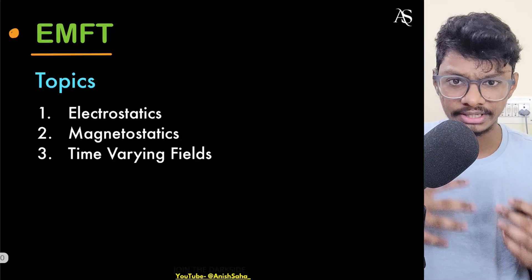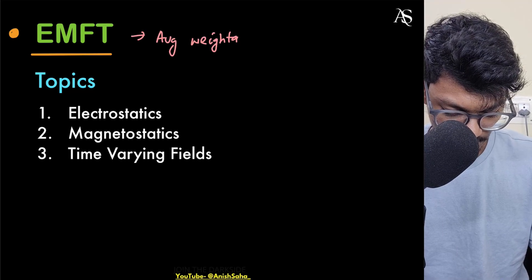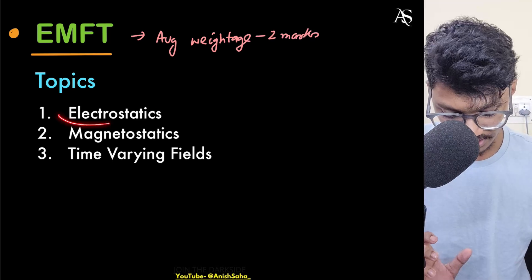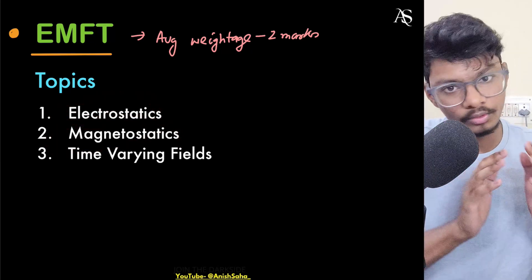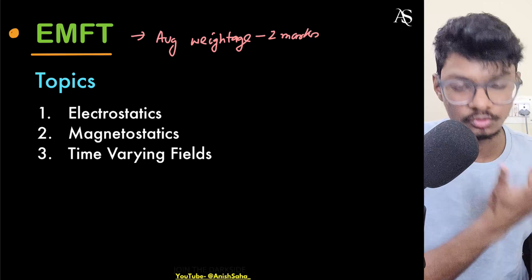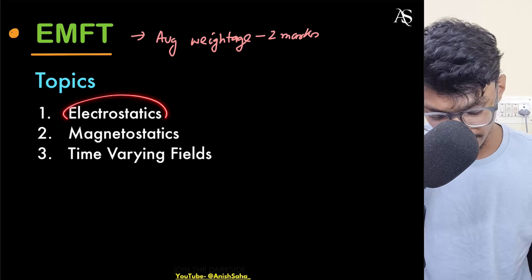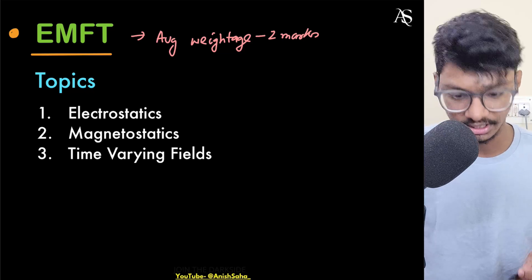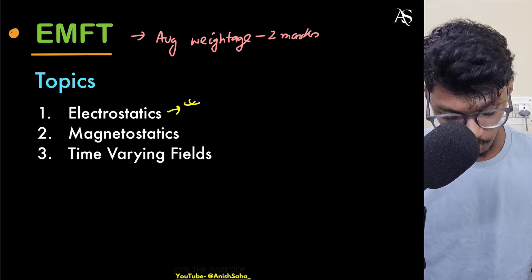Let's start with EMFT. The average weightage of EMFT is around 2 to 3 marks, so you should not skip it. EMFT has three topics: electrostatics, magnetostatics, and time-varying fields. From 11th and 12th we have already studied electrostatics and magnetostatics, and the trend shows questions from electrostatics do come generally. So just study these two topics — they won't take much time since the base is already strong from basic physics.